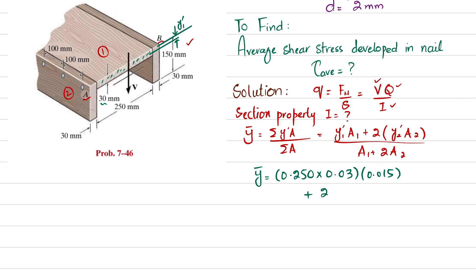For section 2, A2 is 30 mm times 150 mm, which is 0.03 m times 0.150 m. The distance y2-dash is from the top surface to the mid of the second section. That is 150 divided by 2, equal to 75 millimeters, or 0.075 m.